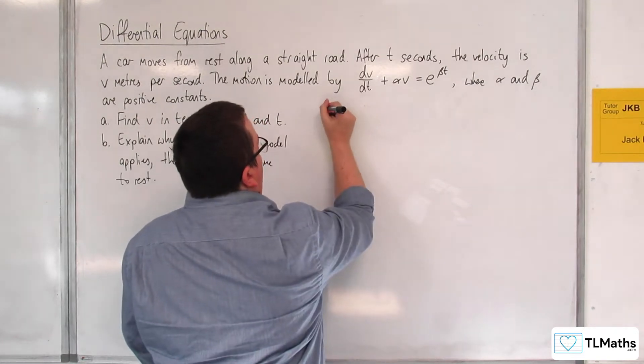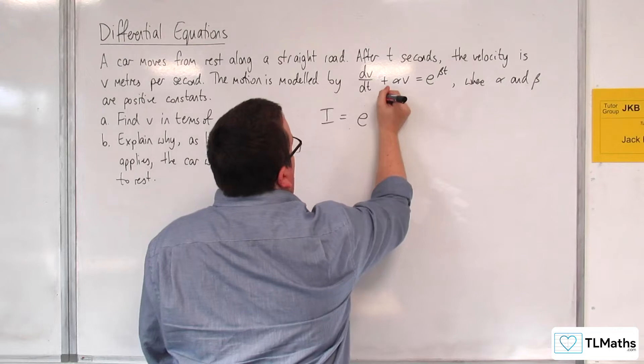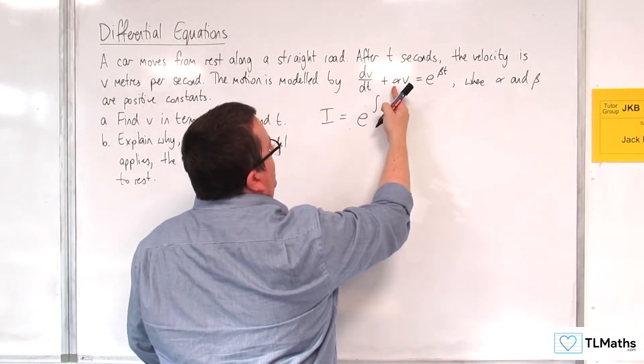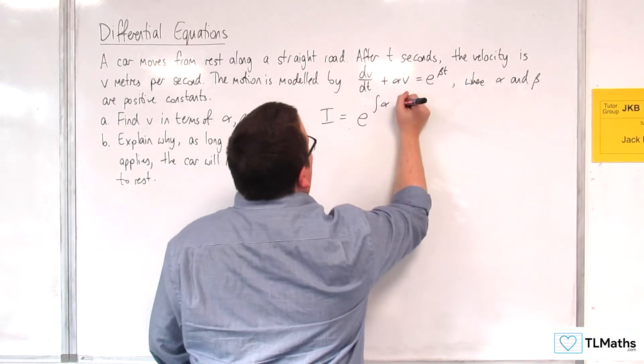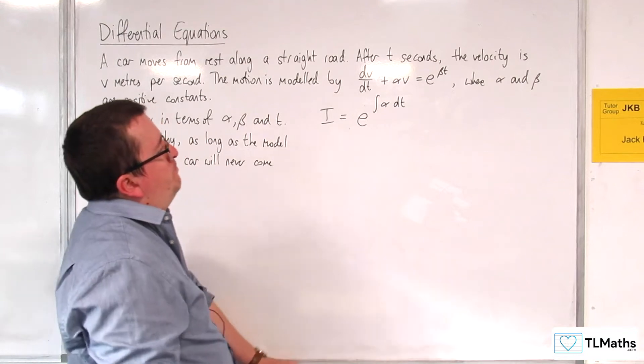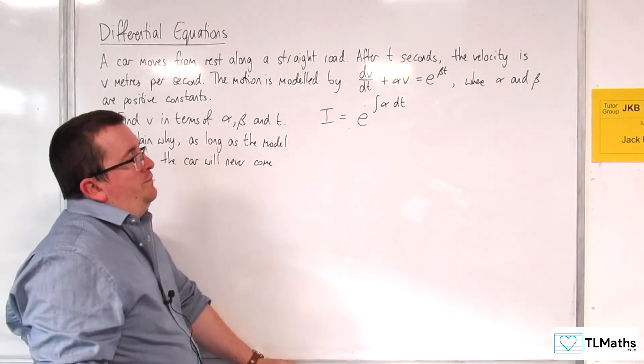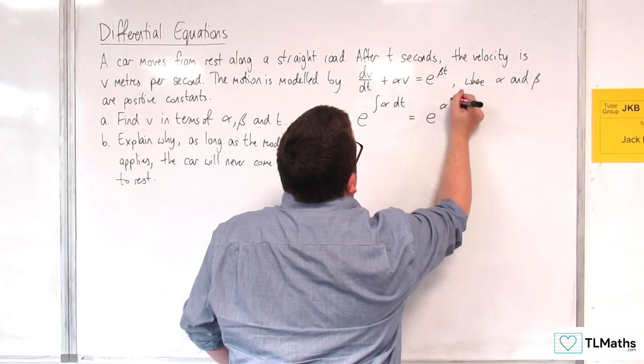First of all, find that integrating factor i, which is going to be e to the power of the integral, the coefficient of v here, so the α times dt. That's just going to be e to the αt.